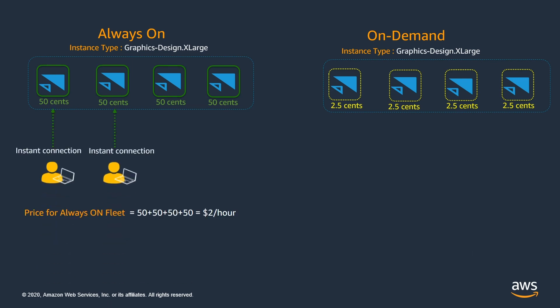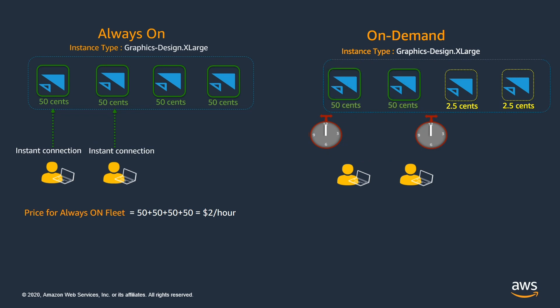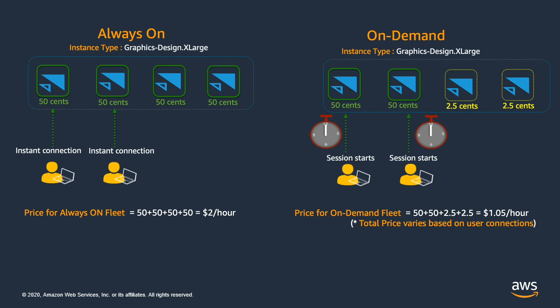Now let's dive a little deeper into pricing by considering a scenario where you are running a graphics design x-large instance type for both always-on and on-demand fleets. Each streaming instance will cost 50 cents per hour when it's running, and both fleets are running four streaming instances each. When the user request comes in for always-on fleet, there is no change in pricing as the running instances are billed regardless of user connections. So the total cost for always-on fleet will be four instances at 50 cents each, which is $2 per hour. Whereas for on-demand fleet, without any user connections, all instances are billed at 2.5 cents per hour. When the user initiates a connection, the instance transitions from standby to running — at that point, pricing transitions from 2.5 cents per hour to 50 cents per hour, and the actual streaming session for the user starts. With two running instances and two standby instances, the total cost for on-demand fleet will be $1.05 per hour.